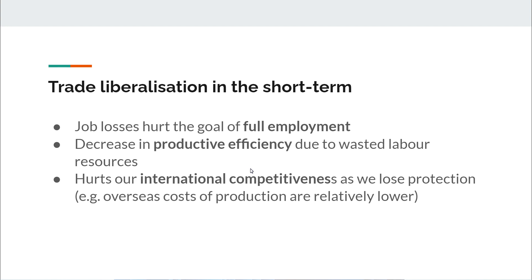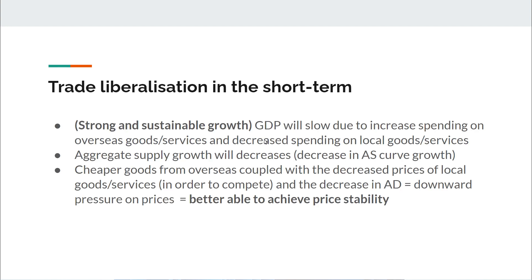That makes us less competitive as we lose that protection. Our costs of production go up because foreign tariffs are removed and our subsidies are lost, so all of a sudden Holden cars become very expensive compared to a Tesla. Strong and sustainable growth is also negatively affected because the slowdown in the economy in the short term means we don't reach our 3% to 3.5% growth in real GDP target. Aggregate supply will also decrease and the capacity of the economy will slow. However, one benefit is that free trade is bilateral or even multilateral, which means Australian consumers also get to buy cheaper goods from overseas, and that could help us achieve price stability or low and stable inflation.